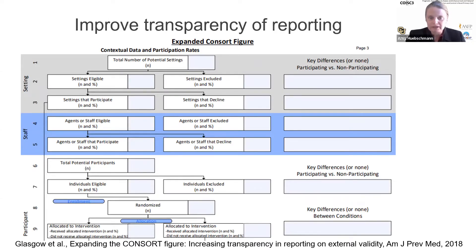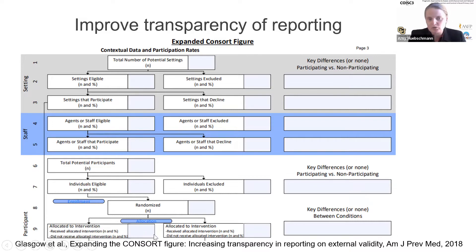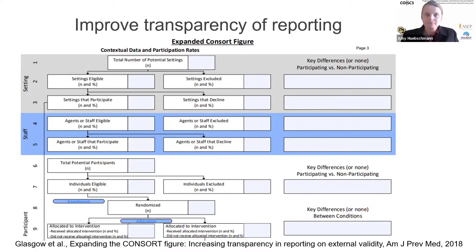On improving the transparency of reporting, what I'm showing here is an excerpt from our 'Expanding the CONSORT Figure' paper that Russ and I co-authored a few years back. The notion is you can take your regular CONSORT diagram and put some things on top of it — layering on a piece around settings and staff, how many settings were excluded of those that were eligible, how many declined, and putting in some reasons. At a high level, people can digest the external validity of how your program was rolled out.